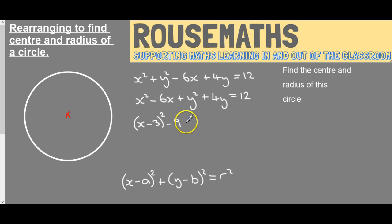If we do the same with the y-terms, we end up with (y + 2)² all squared. If we expand this bracket, we'll get y², we'll get 4y, but we'll also get plus 4, which we don't want. And that's still all equal to 12.